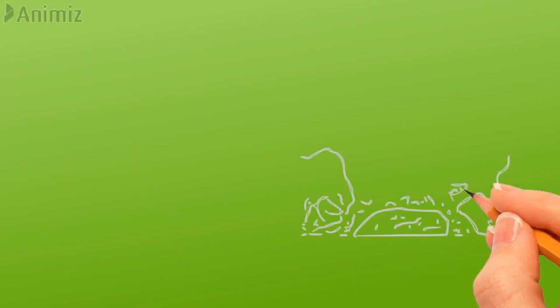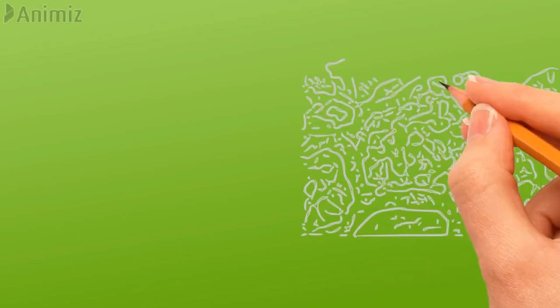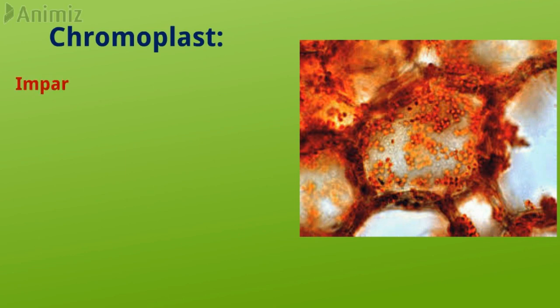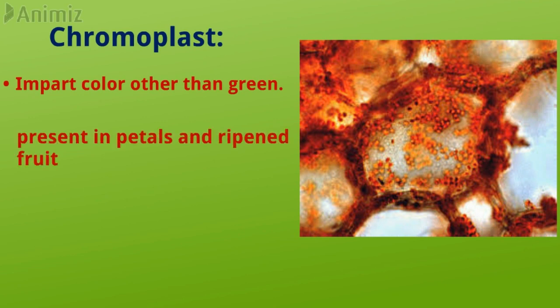The second type of plastid is the chromoplast. They impart colors other than green to plants. They are present in the petals of flowers and in ripened fruit, and they help in pollination and dispersal of seeds.